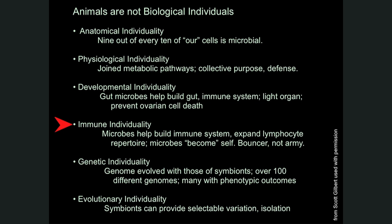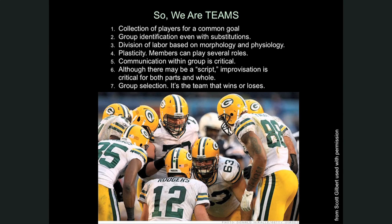Immune individuality: microbes help build the immune system, they expand the lymphocyte repertoire. Microbes become self — they're a bouncer, not an army. Genetic individuality: the genome co-evolved with those of symbionts, over 100 different genomes, many with phenotypic outcomes. And evolutionary individuality: symbionts can provide selectable variation and reproductive isolation. So the message is that we aren't individuals — we are teams or communities with these kinds of properties.